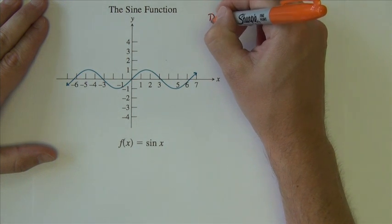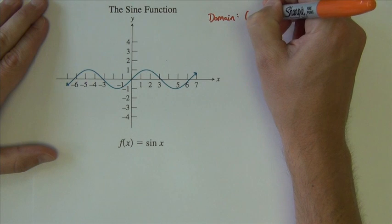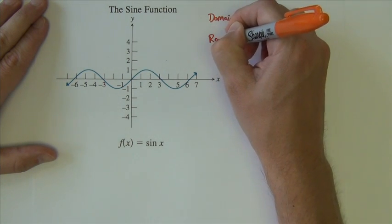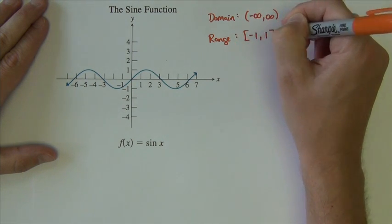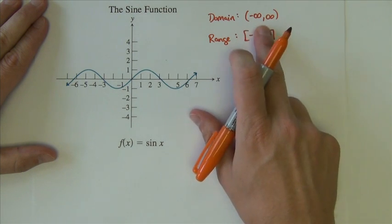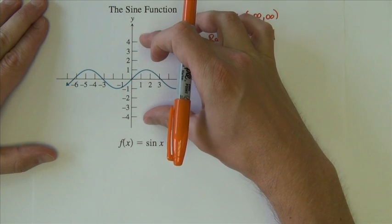For the sine curve that we see here, domain is negative infinity to positive infinity. Range is negative 1 to 1. Domain will always be that.